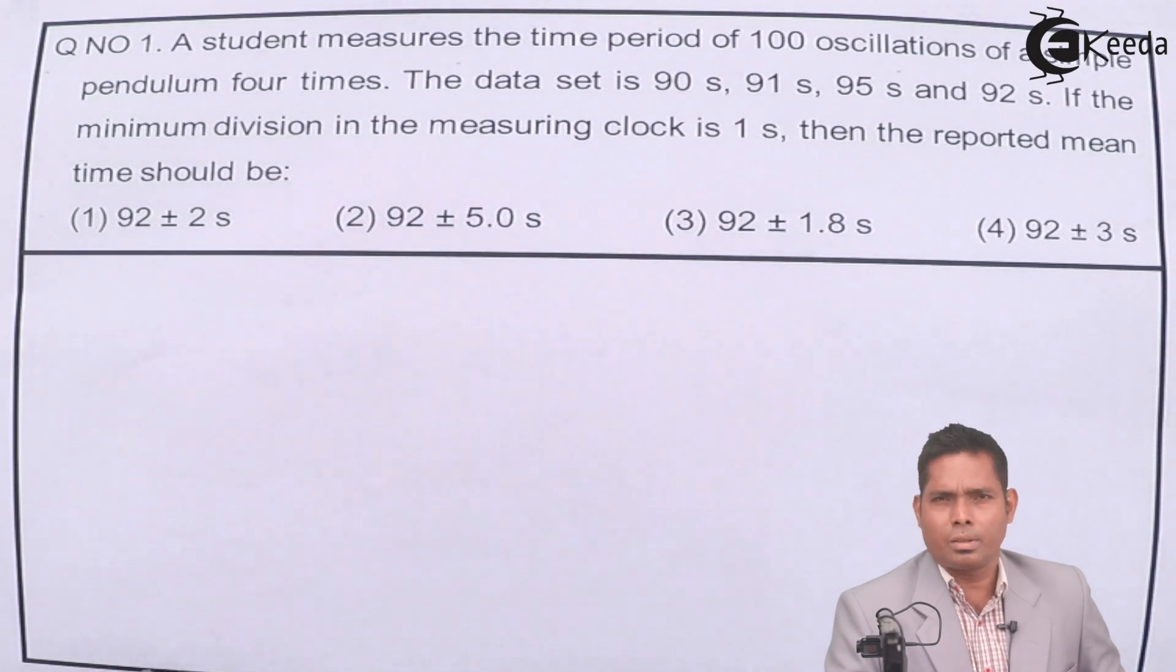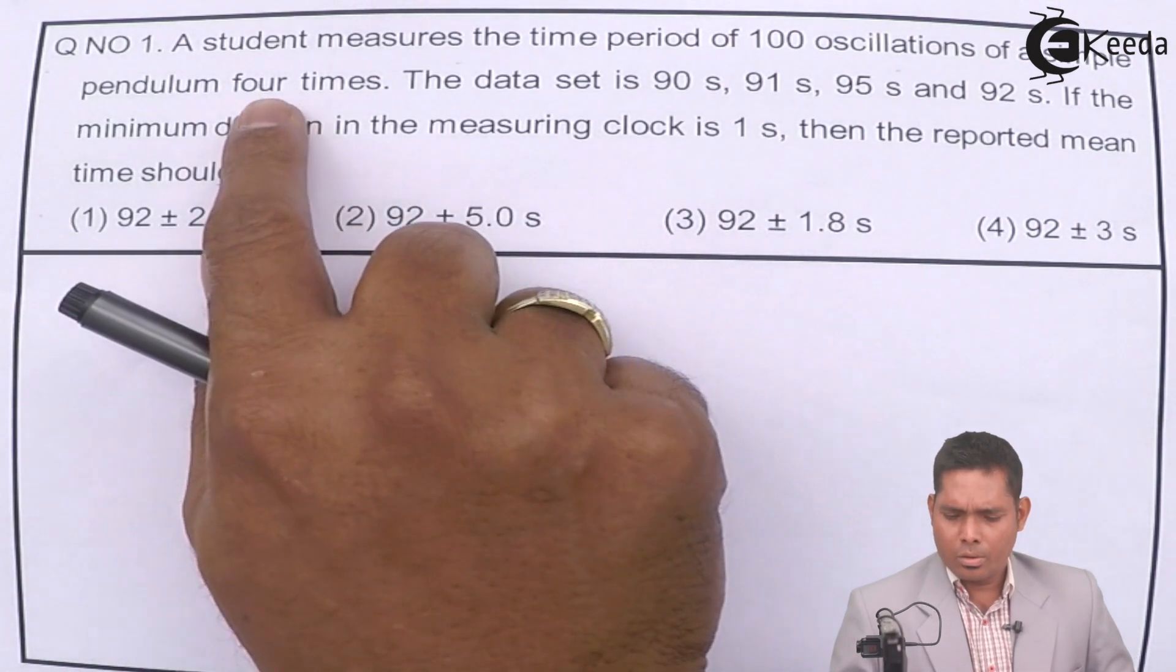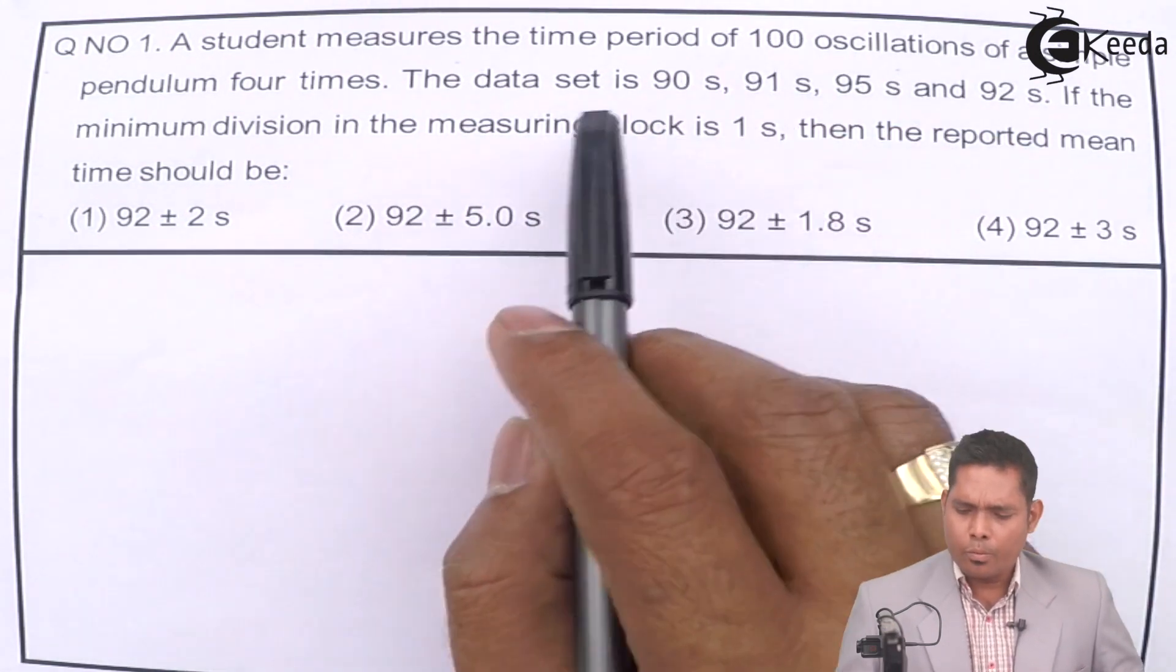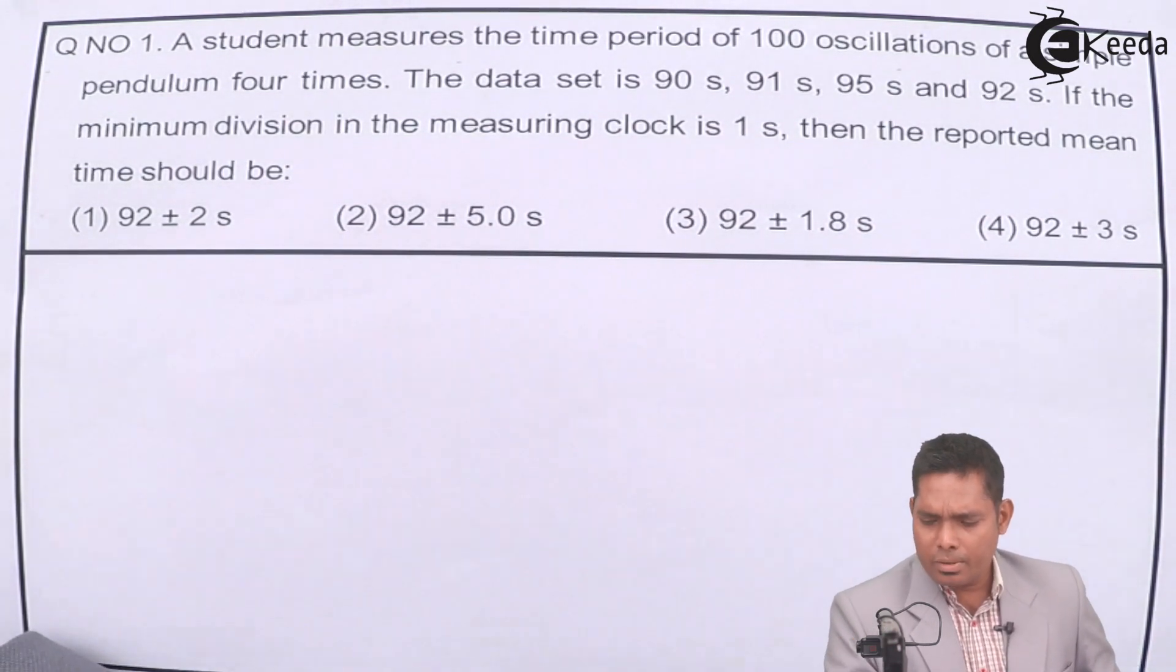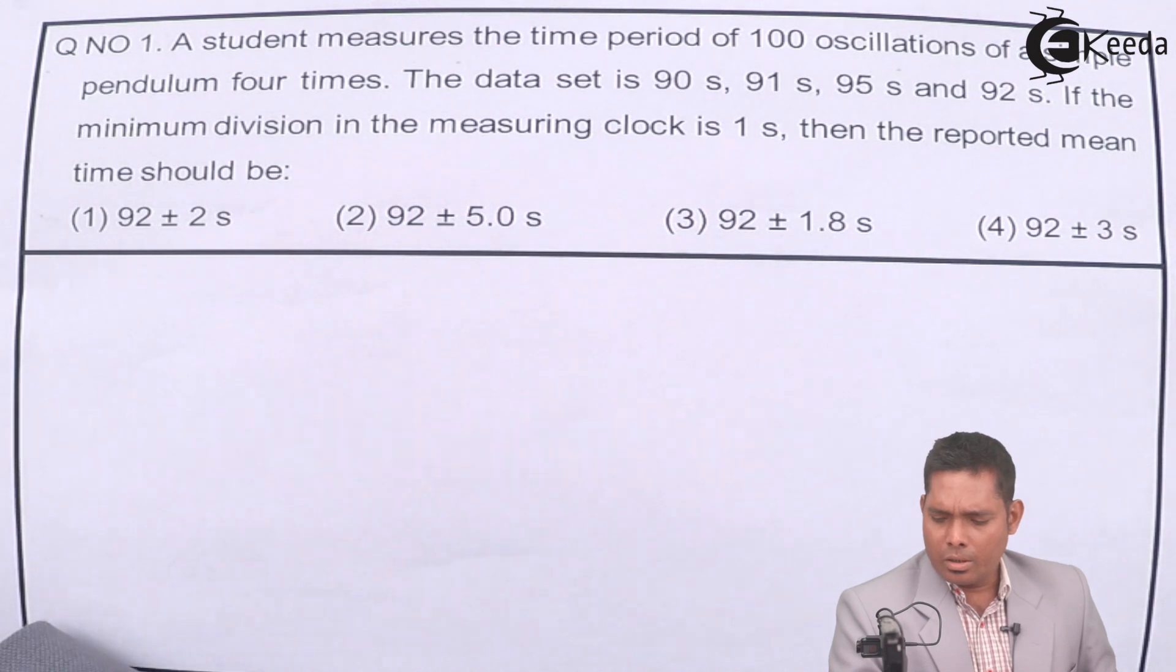We will start with question number 1. Question number 1 says, a student measures the time period of 100 oscillations of a simple pendulum four times. The data set is 90 seconds, 91 seconds, 95 seconds, and 92 seconds. If the minimum division in the measuring clock is 1 second, then the reported mean time should be.